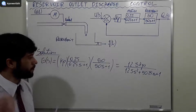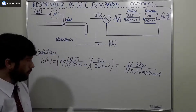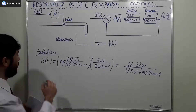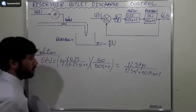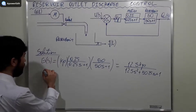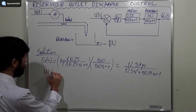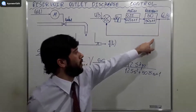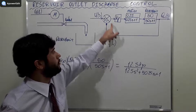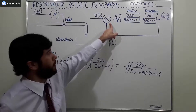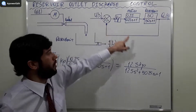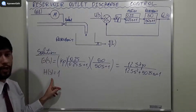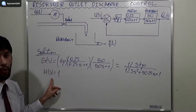So, we know that G(S) is this expression. And then we are going to call H(S) equal to 1, because the output is being directly fed back into the feedback loop. So the transfer function of the feedback element H(S) equals 1.